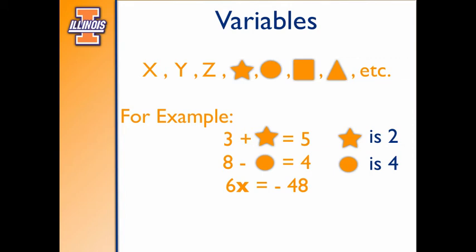The last one, 6 times X equals negative 48. Well we know that if this number sentence is gonna work then X has to represent the number negative 8. All these numbers are the specific values, the only values that make each number sentence work.